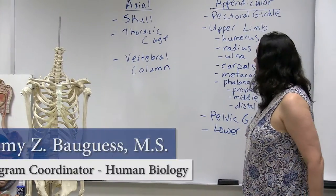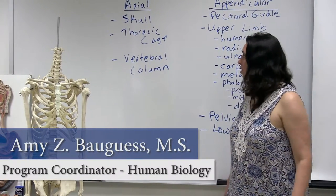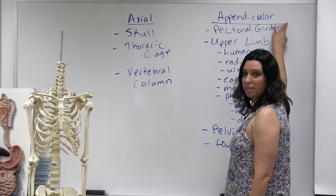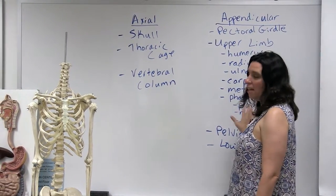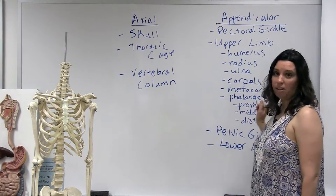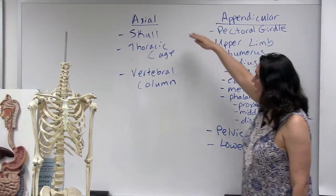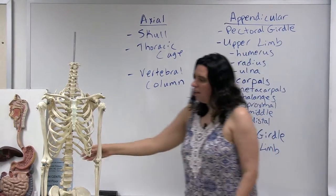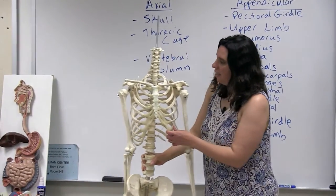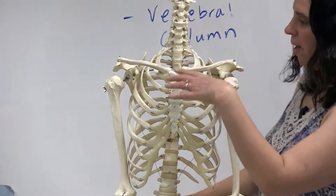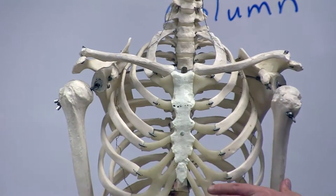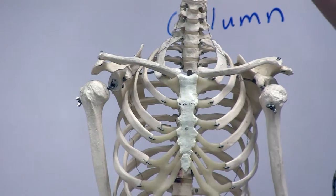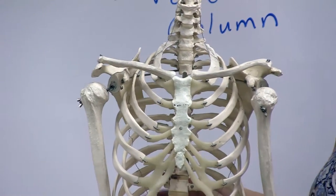We're going to continue our discussion of the skeletal system. Just a reminder: it's divided up into two main parts, the axial and appendicular skeleton. Our focus today will be on the appendicular, and more specifically on the upper limb. The axial skeletal system is the skull, the thoracic cage, and the vertebral column — really the main core of the body, consisting of the sternum, the ribs, the skull, and the vertebral column.